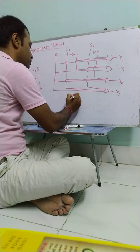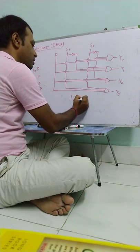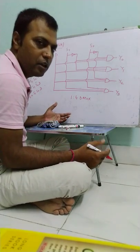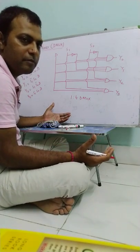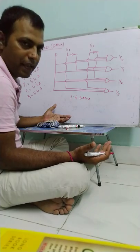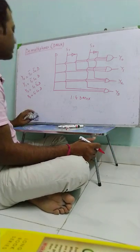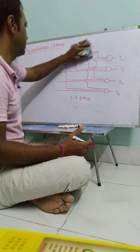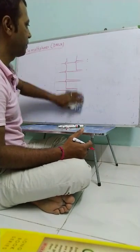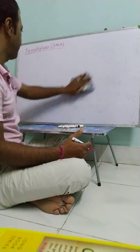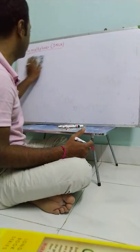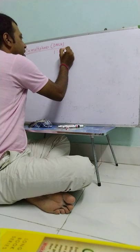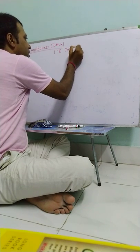So this is 1 to 4 demux. Now similarly, we can design 1 to 8 demux. So first, the truth table for 1 to 8 demultiplexer.